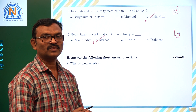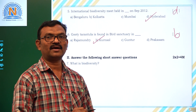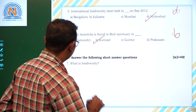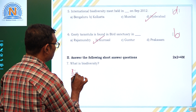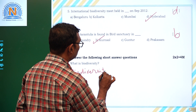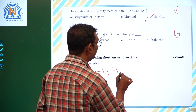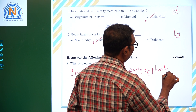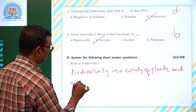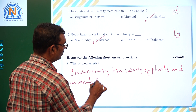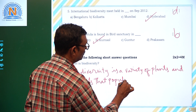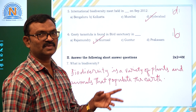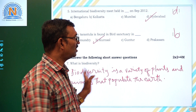What is Biodiversity? Biodiversity means a variety of life. The word meaning is the variety of plants and animals that populate the earth. So different types of plants and animals together that are seen on the earth are called Biodiversity.